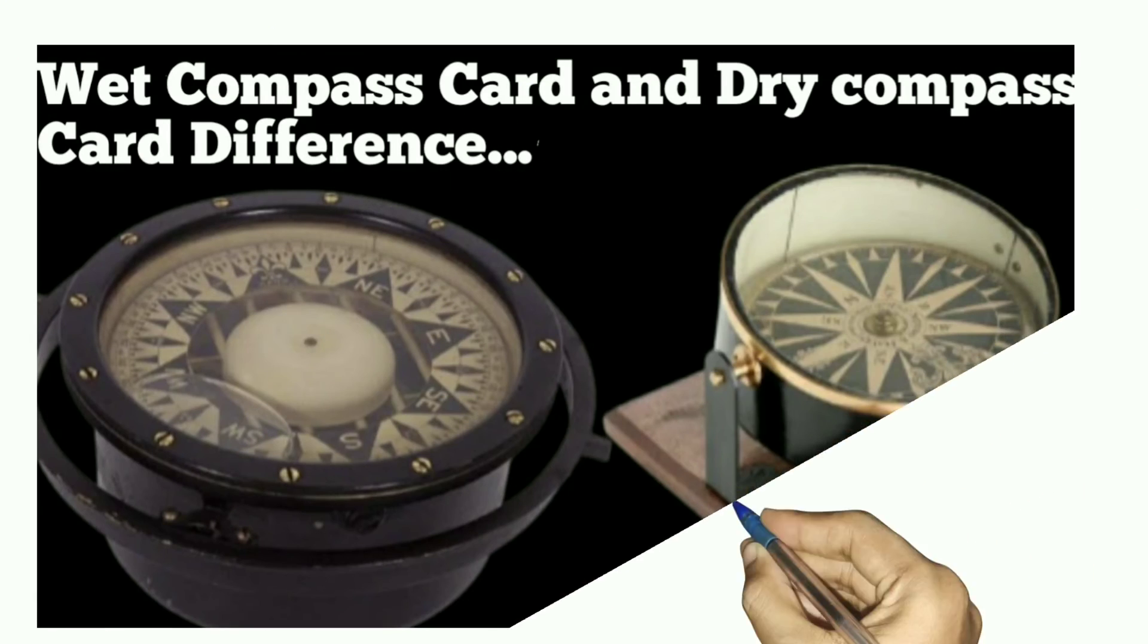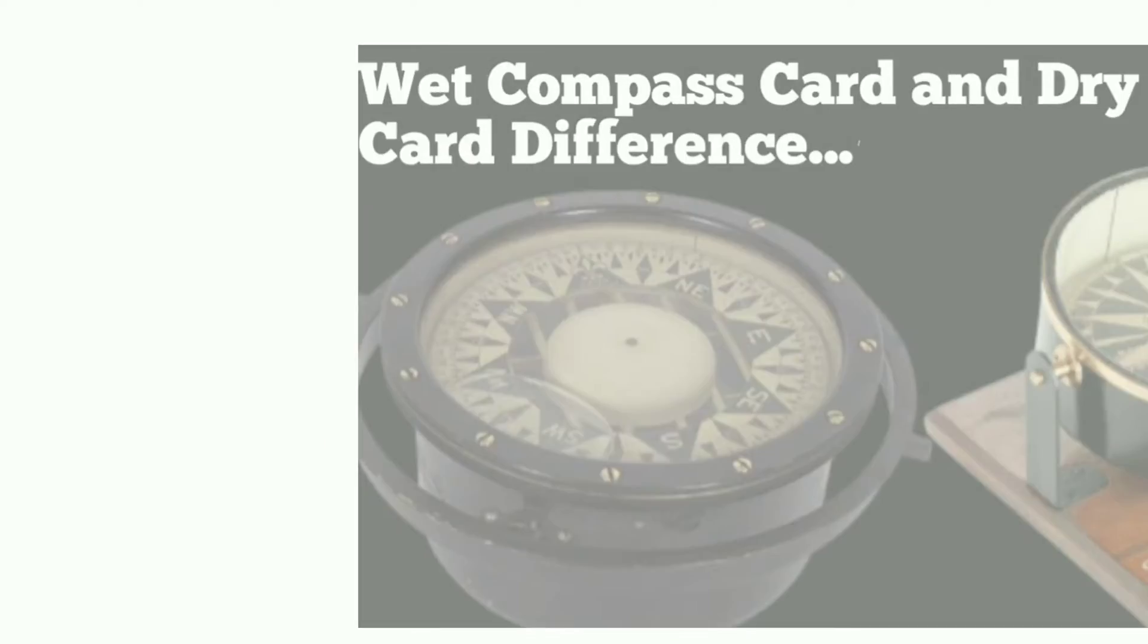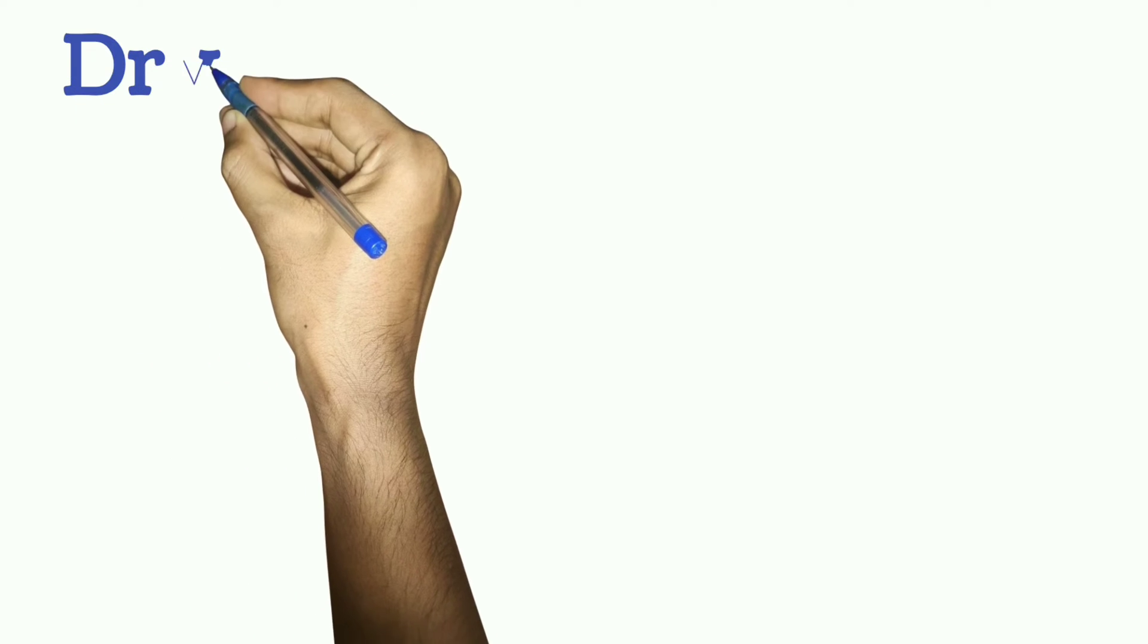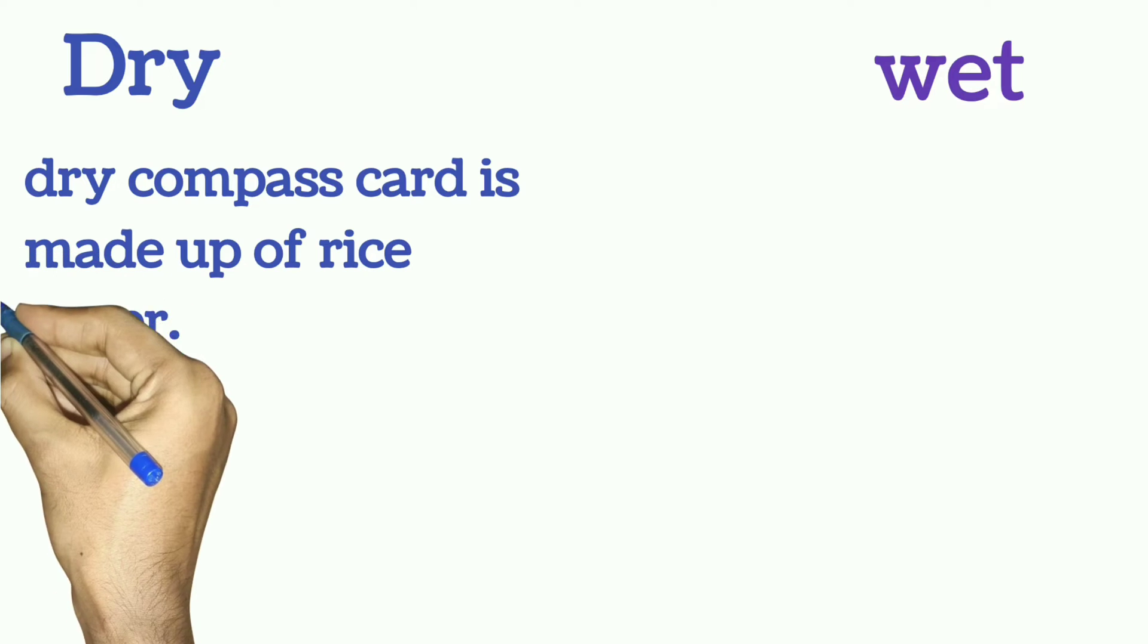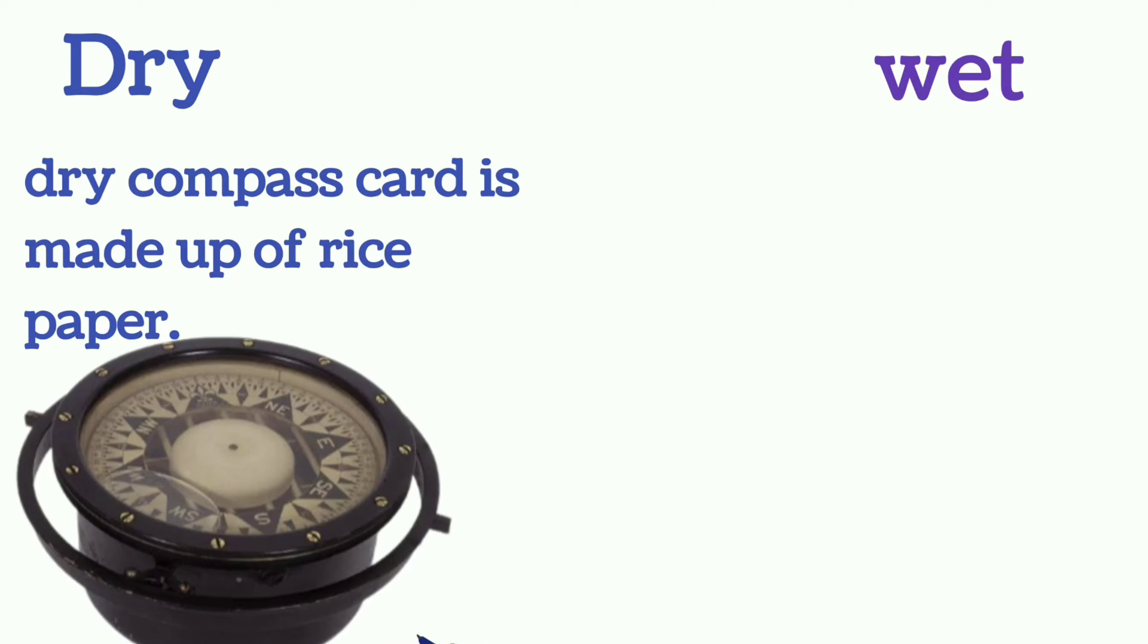Hello and welcome. In this video we will discuss the difference between dry compass card and wet compass card. The dry compass card is made up of rice paper whereas the wet compass card is made up of mica in one piece.